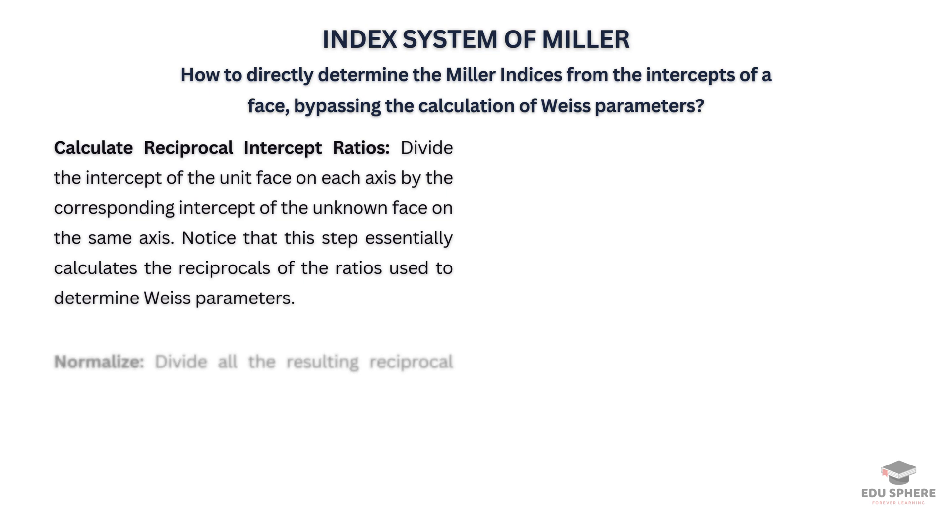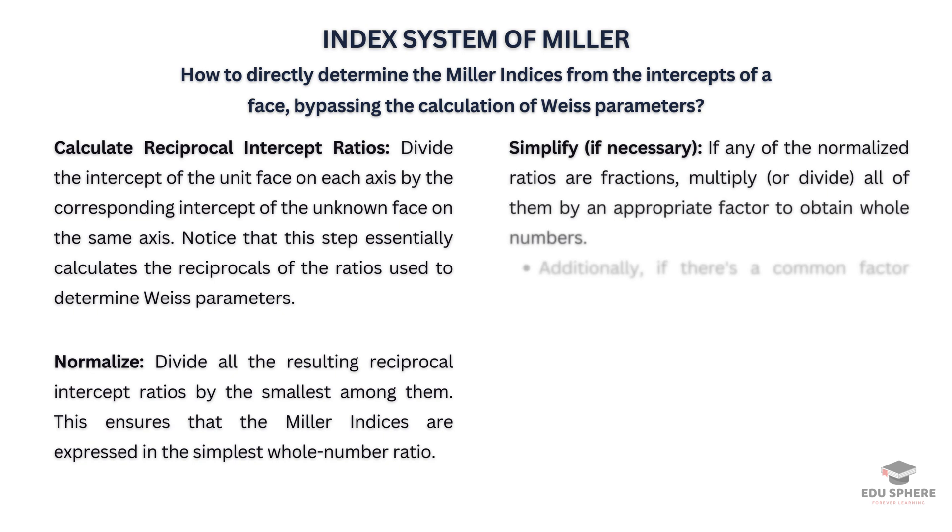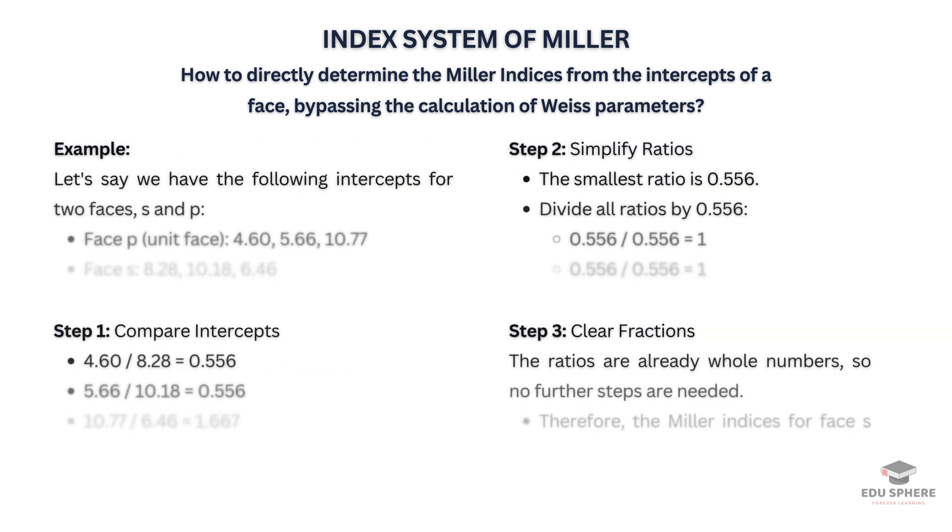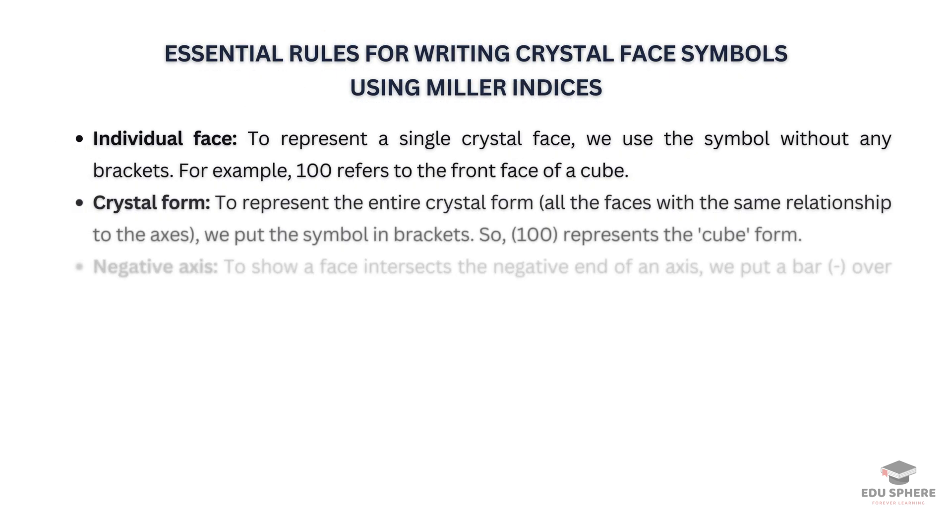Next, we normalize the ratios by dividing them all by the smallest of the ratios. This ensures we have whole numbers. Finally, if any ratios are still fractions, multiply or divide them by a suitable factor to obtain whole numbers. Additionally, simplify the indices further by dividing them by a common factor. By following these steps, you can directly determine Miller indices from the intercepts of a crystal face. Make sure to take a look at these essential rules for writing crystal face symbols using Miller indices.